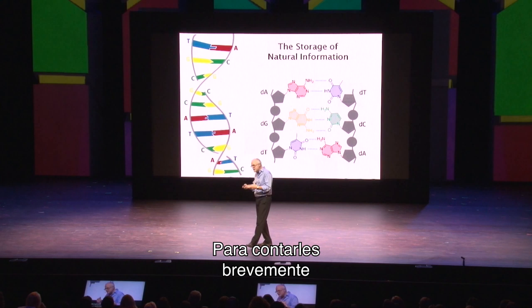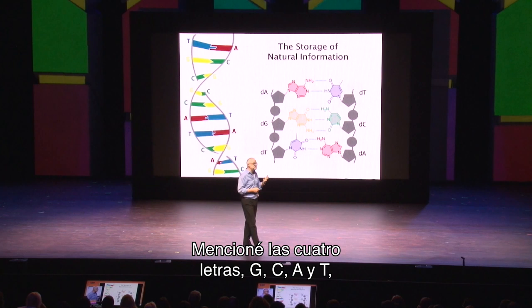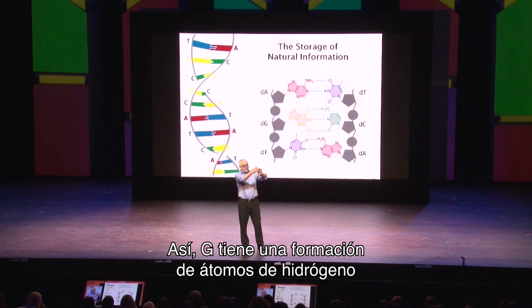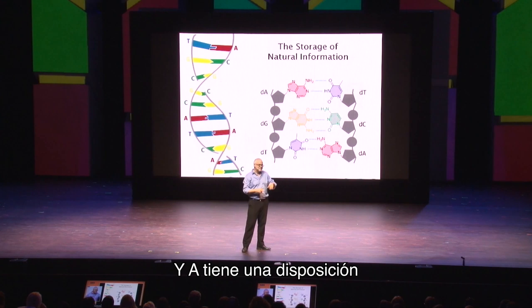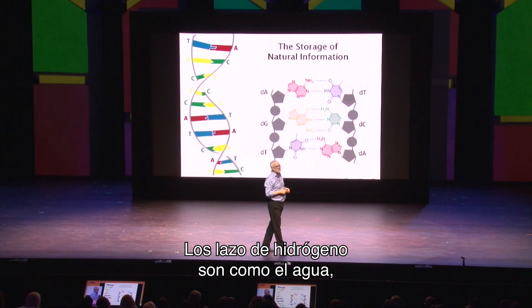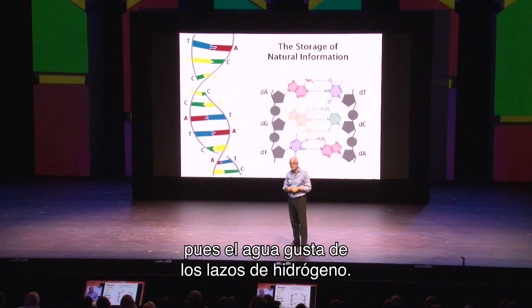To explain how we did it: the natural letters G, C, A, and T form two base pairs. The way they do that is they share hydrogen atoms. G has an array of hydrogen atoms that's perfect for C to latch onto — that's why G and C bind each other. A has a disposition of hydrogen atoms that's perfect for T to grab onto. That's why they form the rungs of the ladder — that's why they pair to form a base pair. Hydrogen bonding is actually very much like water; it's the sort of force that gives water its unique properties.